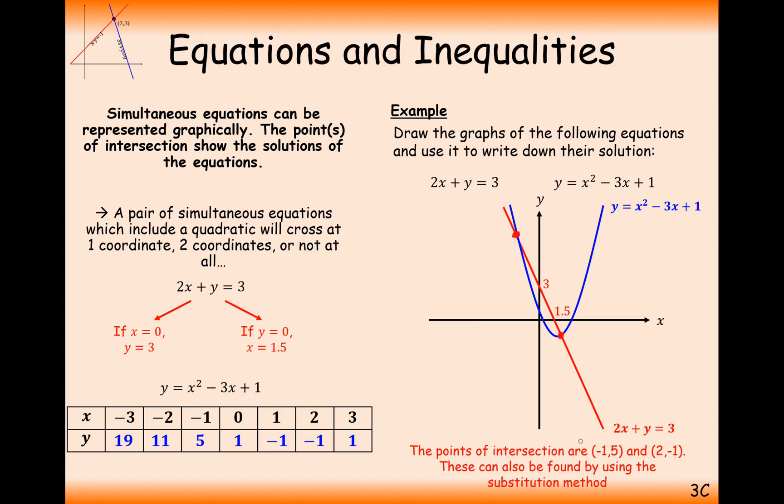And here, if you were to plot this graph exactly, you'll find you've got a coordinate up here of minus 1, 5, and down here, 2, minus 1.